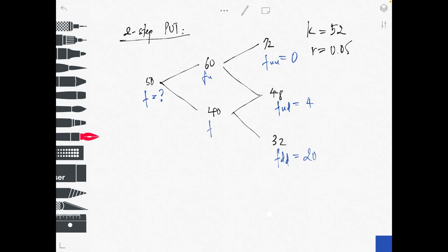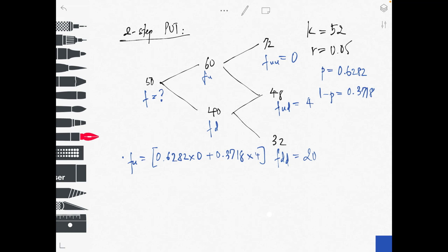Applying the formula to calculate p for this example gives p equals 0.6282 and 1 minus p equals 0.3718. So f_u equals 0.6282 times 0 plus 0.3718 times $4, multiplied by e^(−rt) where r equals 0.05 and t equals 1 year. This gives f_u equals 1.4147.